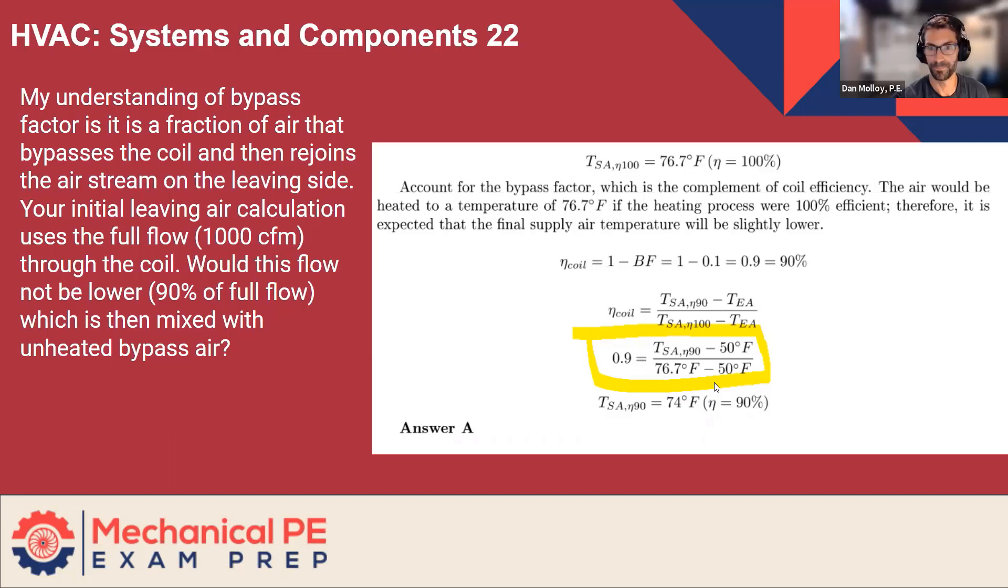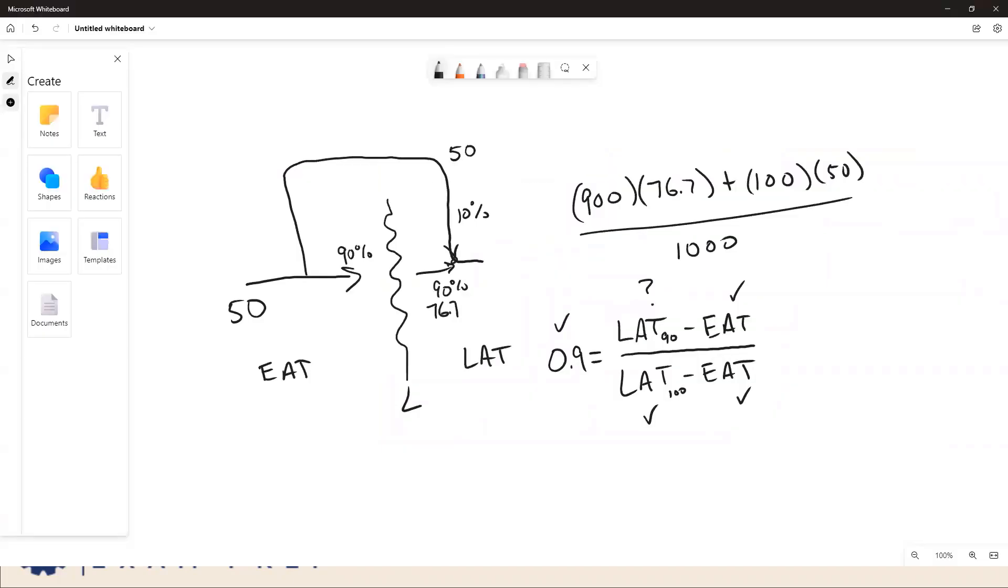Hey, Dan. Yeah, go ahead. I'm sorry, I was trying to do the unmute and I was unsuccessful. This is Bill. Hey, Bill. And so when I was looking at that, okay, if you assume 10% goes around, then your T supply air leaving the coil would be based on 900 CFM and not a thousand. Yeah, I agree.